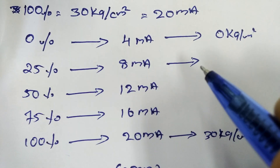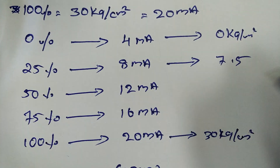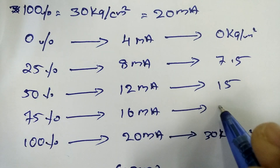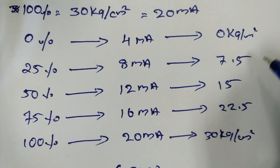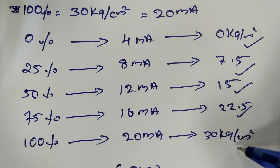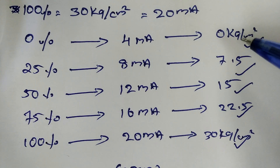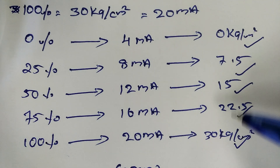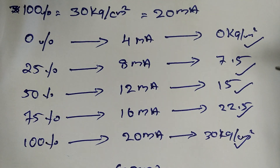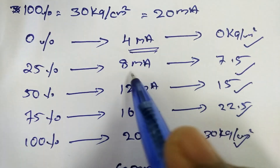Applying the calculated values: 7.5, 15, and 22.5 kg per cm². We use a comparator pump or hand pump, which is available to us, and we calibrate the transmitter using these values.